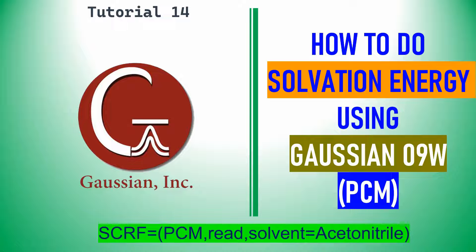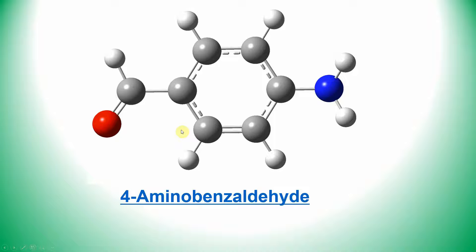This is tutorial 14 in Gaussian. In this tutorial you can learn how to do solvation energy calculation using Gaussian 09 Windows version or Linux version. The focus is on the PCM model solvation calculation — PCM means Polarizable Continuum Model. The system used is 4-aminobenzoyl decayed. The tutorial covers how to prepare input files for optimization and solvation energy calculation, and how to compare gas phase and solvation energies.